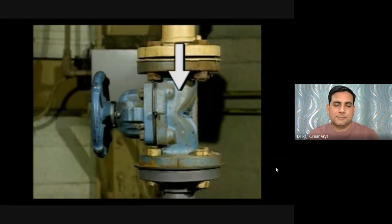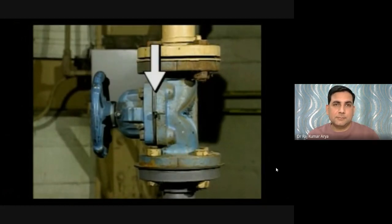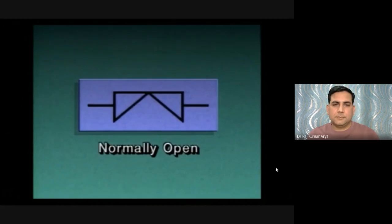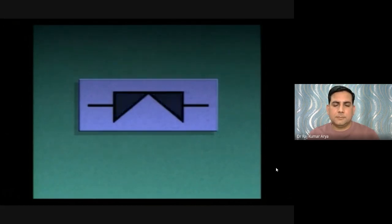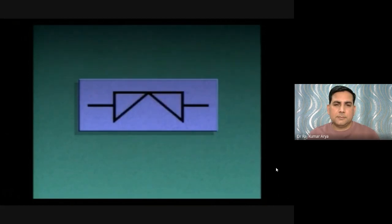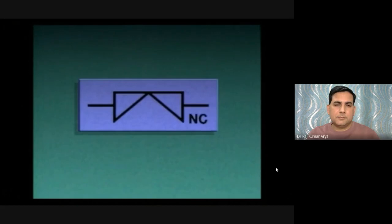On piping diagrams, a diaphragm valve is represented by a specific symbol. If the symbol looks one way or has the letters 'NO' beside it, the valve is normally open during process operations. If the symbol appears differently or has 'NC' beside it, the valve is normally closed during process operations.